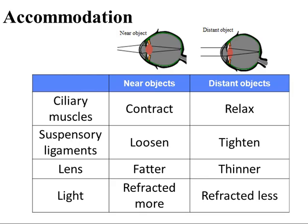To summarize accommodation: when viewing near objects, the ciliary muscles contract, suspensory ligaments loosen, and the lens becomes fatter and thicker — light is more refracted. When viewing distant objects, the ciliary muscles relax, suspensory ligaments tighten, and the lens becomes thinner — light is less refracted.